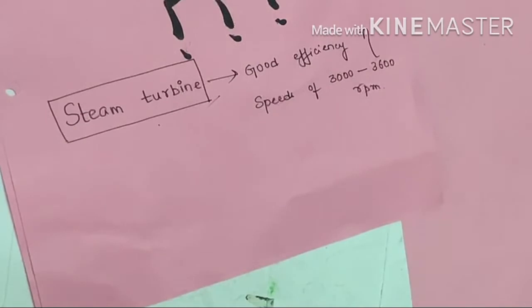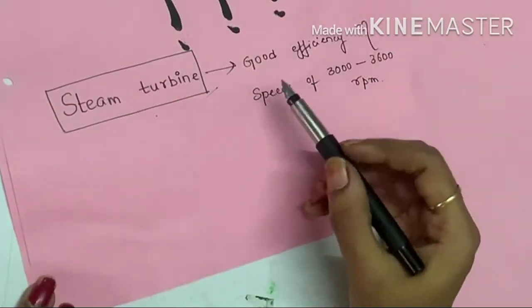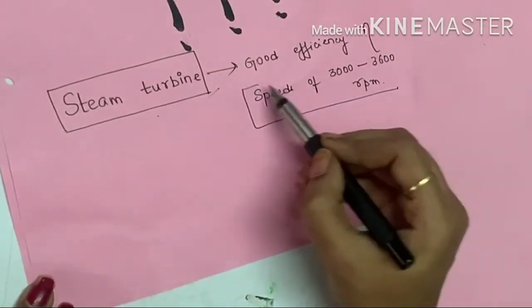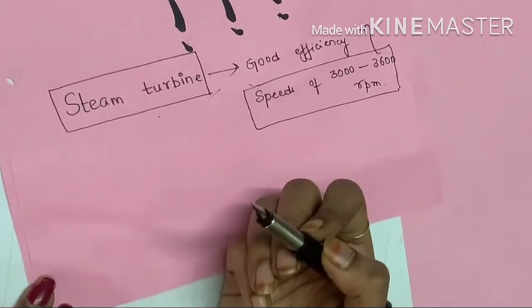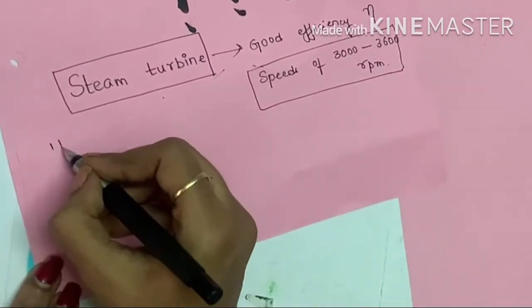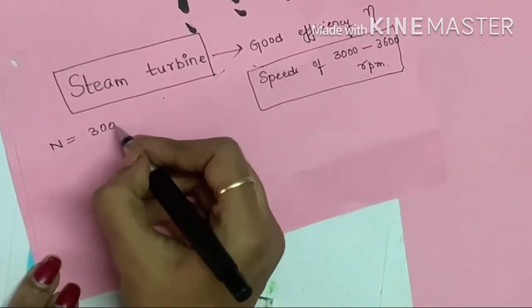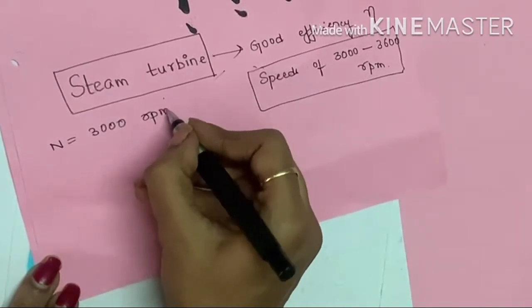So we try to operate the steam turbine at these speeds. If I consider the speed of 3000 rpm, the formula for frequency is F = PN by 120. I think you know this.